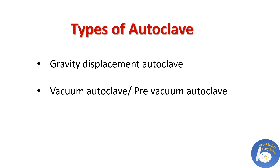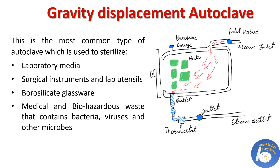Types of autoclave: there are two main types — gravity displacement autoclave and vacuum (pre-vacuum) autoclave. In the gravity displacement autoclave, the most common type, steam is pumped into the chamber which displaces the ambient air and forces it out through exhaust walls, so that the remaining steam can sterilize the contents. It is used to sterilize laboratory media, surgical instruments, lab utensils, borosilicate glassware, and medical and biohazardous waste containing bacteria, viruses, and other microbes.